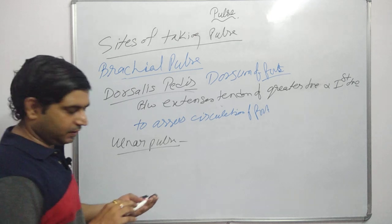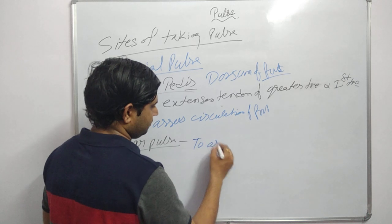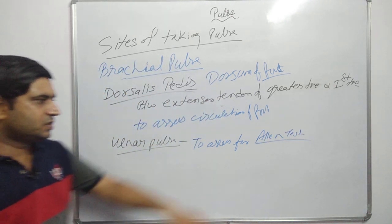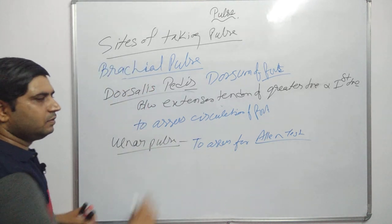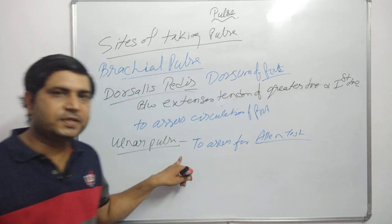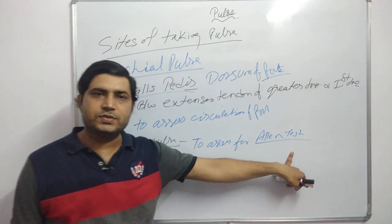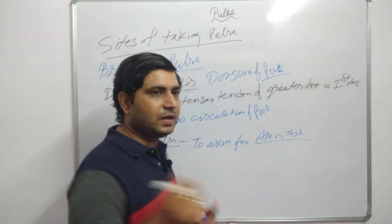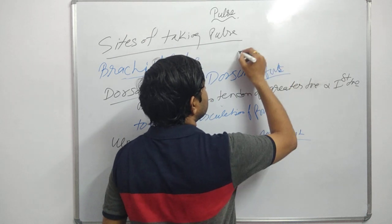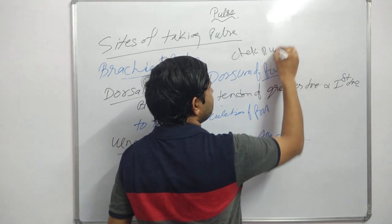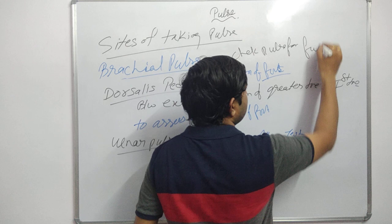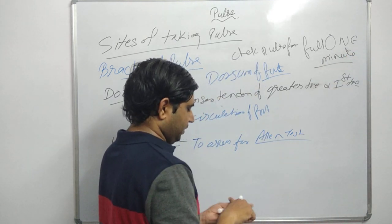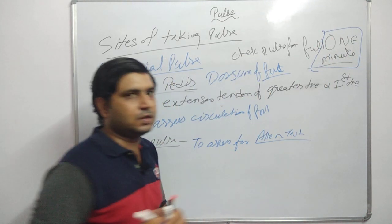The ulnar pulse does not have a major role, but it is used for the Allen test. Before doing ABG sampling, we perform the Allen test, for which the ulnar artery is used. The indication is for the Allen test. Always remember: whenever you check pulse, you have to check it for a full one minute.